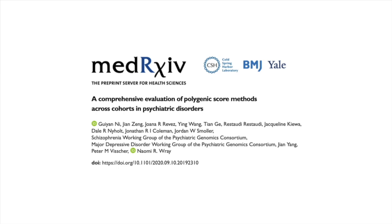In recent years many other methods have been published that use Bayesian regression frameworks to model the linkage disequilibrium and thereby calculate LD-corrected weights. These methods — like LDpred, PRS-ES, and SBayesR — have been benchmarked in a recent manuscript and they perform much better than classical PRS.